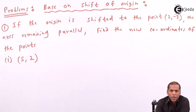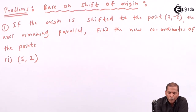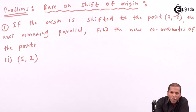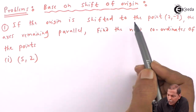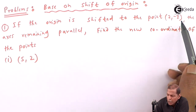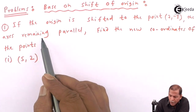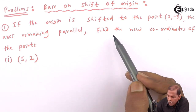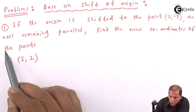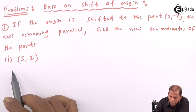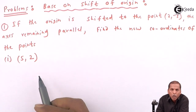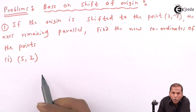Hello friends. Now we see problem number 1, which is based on shift of origin of the chapter Locus. The problem is: if the origin is shifted to a point, the axes remaining parallel, find the new coordinates of the point. Sub-question 1 — let's see the solution.